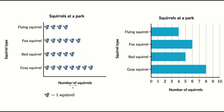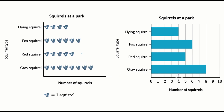What you see here are two different ways of looking at the same information. For example, if I were to ask you — and you could look at either this graph on the left or this graph on the right — what type of squirrel do they find the most of at the park? What would your answer be?